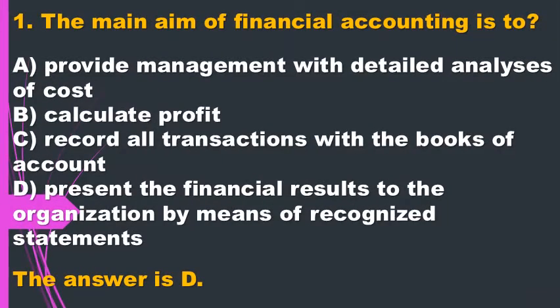Question 1. The main aim of financial accounting is: A. Provide management with detailed analyses of cost. B. Calculate profit. C. Record all transactions within the books of account. D. Present the financial results to the organization by means of recognized statements. The answer is D.